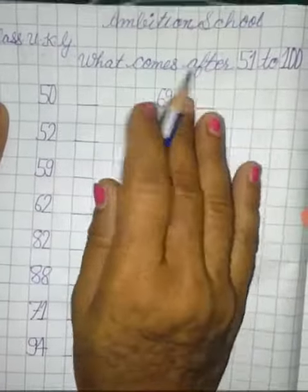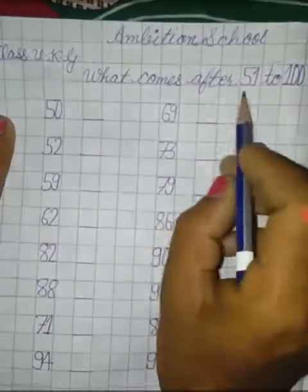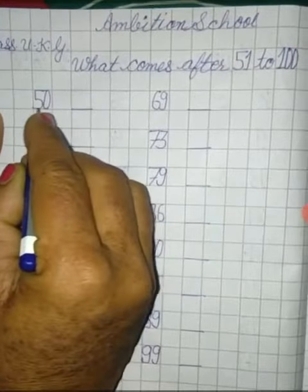We have done 1 to 50. Now, next 51 to 100. Now, 5, 0, 50.